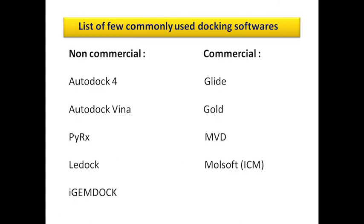So these are the list of few commonly used docking softwares. Non-commercial software like Autodock 4, Autodock Vina, PyRx. PyRx actually uses Autodock Vina, but through PyRx you can use Vina for batch mode screening. LeDock is also there, iGEMDOCK. So these are the list of few non-commercial commonly used docking software. Among commercial docking software, Glide, Gold, Molegro, Virtual Docker and Molsoft from ICM are also there.